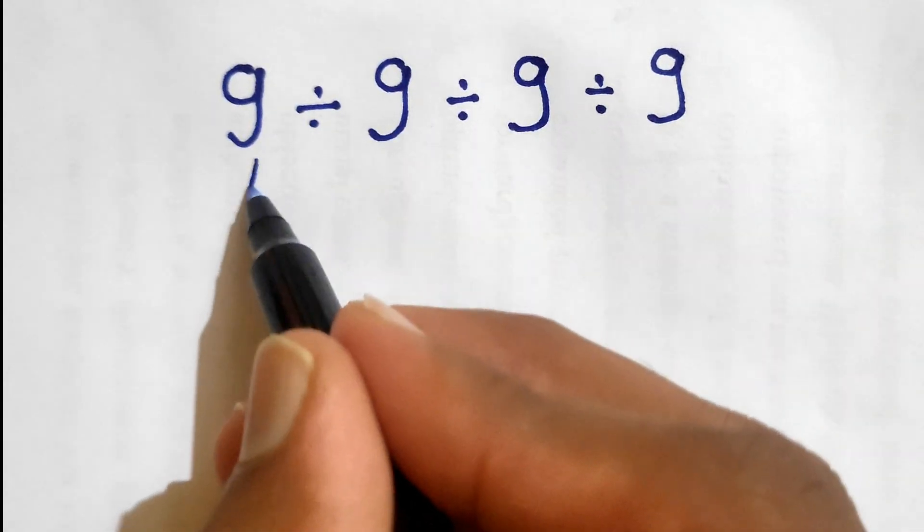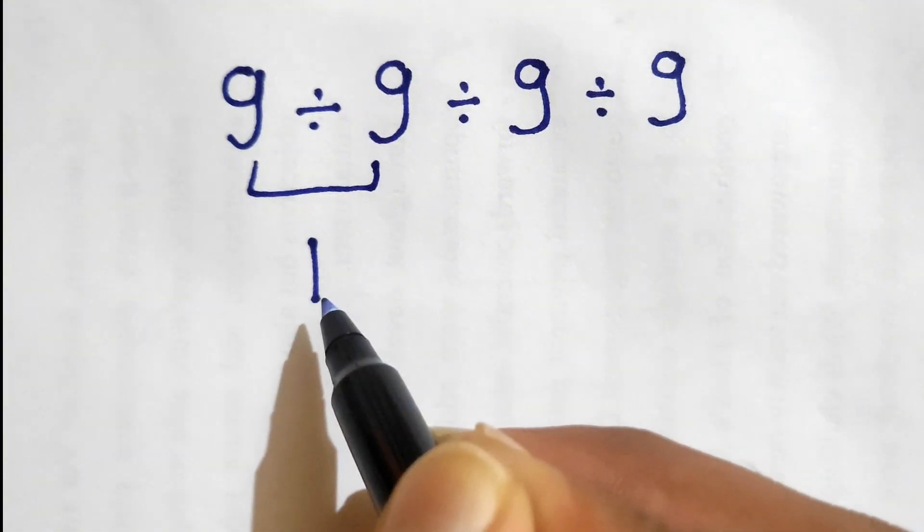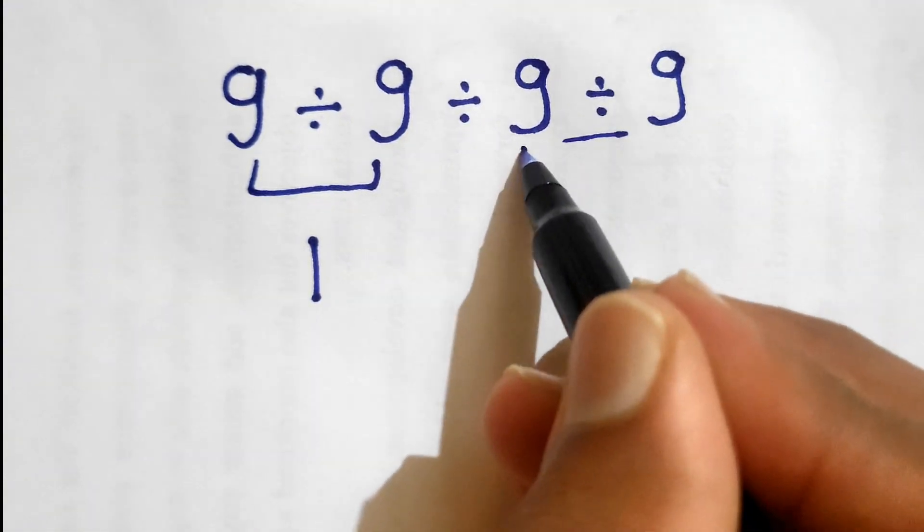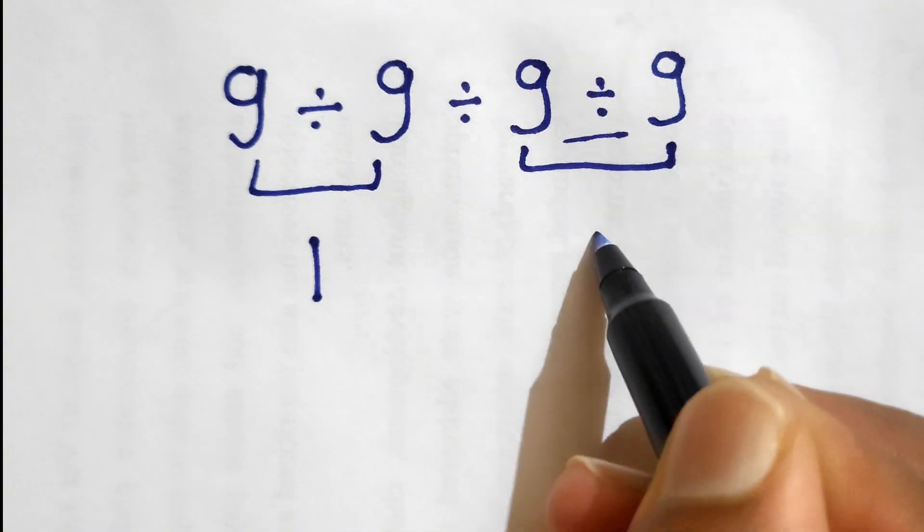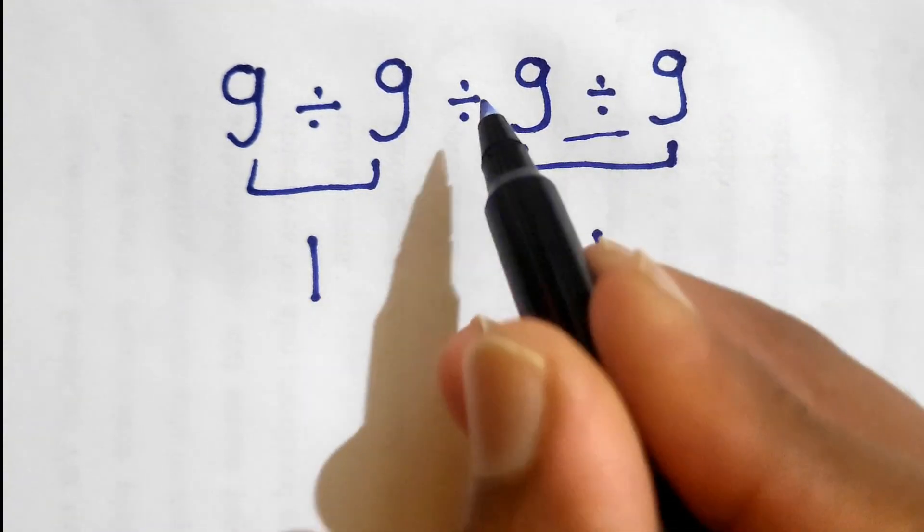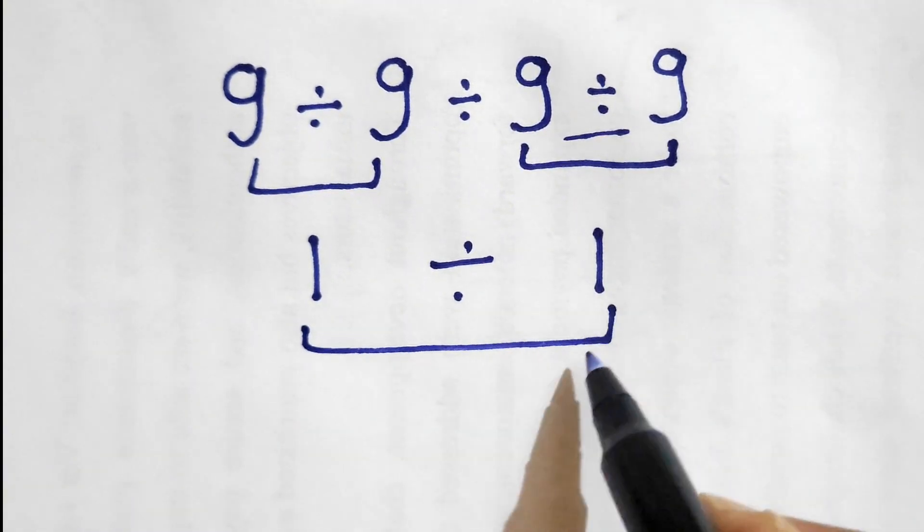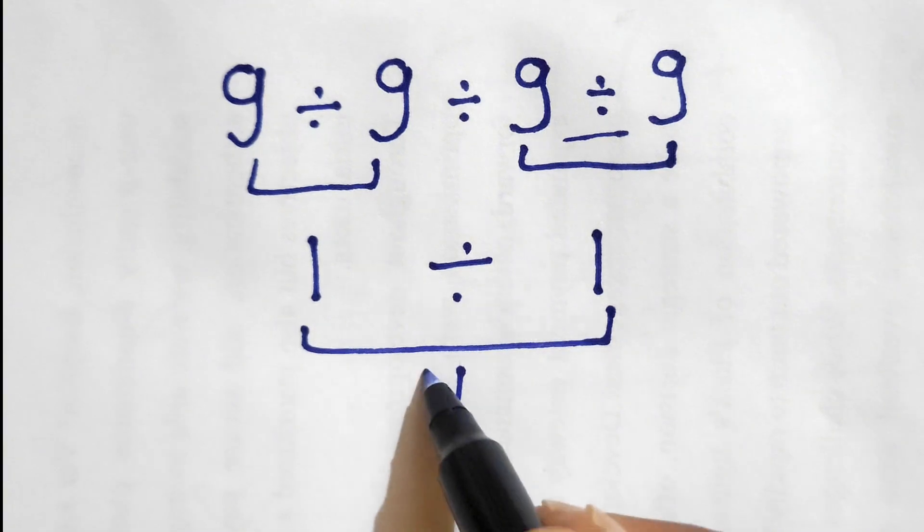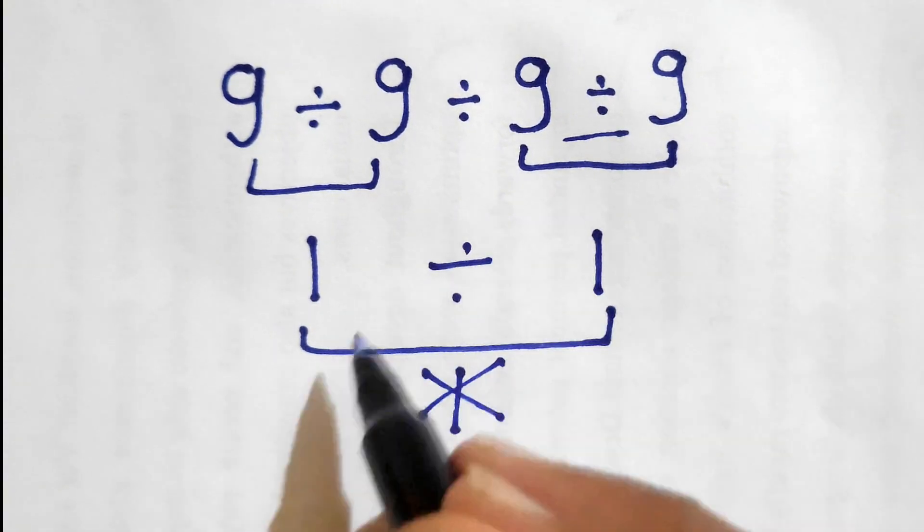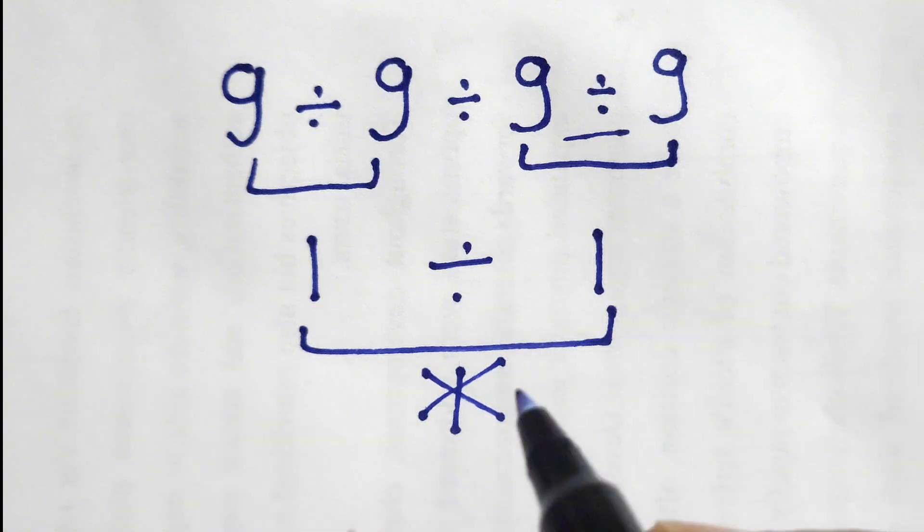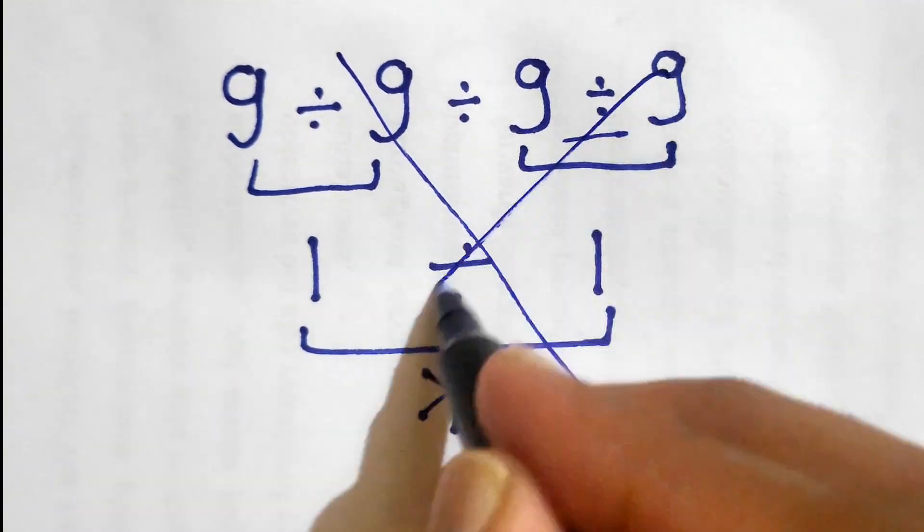9 divided by 9 gives us 1, and again this 9 divided by 9 also gives us 1. Now we have 1 divided by 1, so 1 divided by 1 gives us 1. But this answer is not correct because we have not followed the proper order of operations, and this method is totally incorrect.